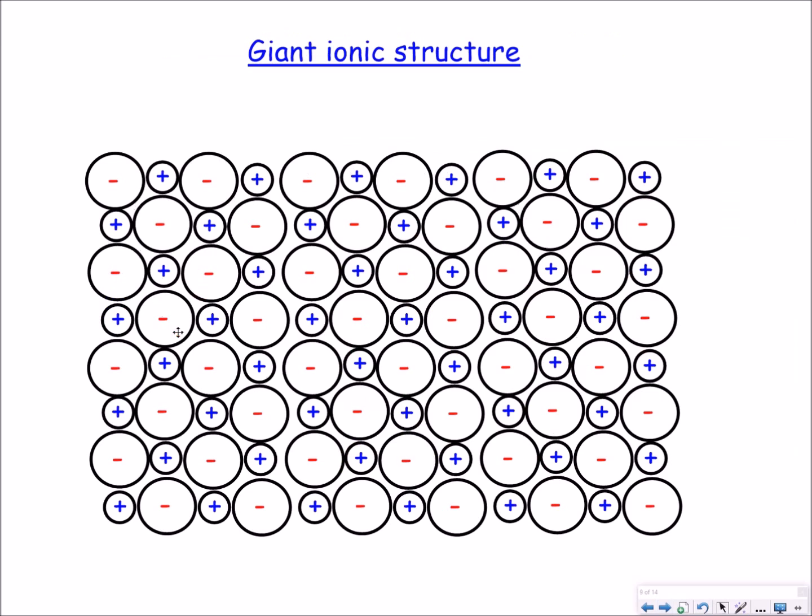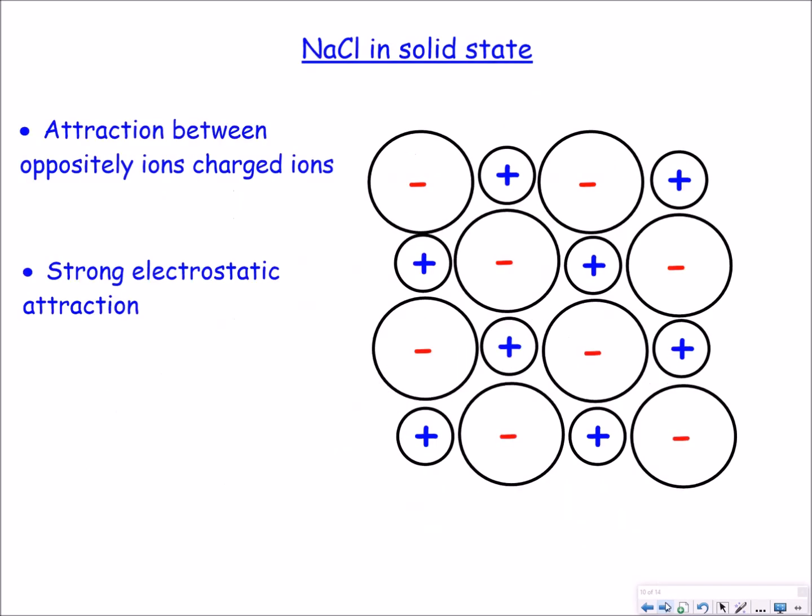This is why we call ionic compounds giant ionic structures because not only do you have to separate one bond but you have to separate all of these ionic bonds. This gives ionic compounds special properties such as high melting points, high boiling points and also hard crystalline structure.